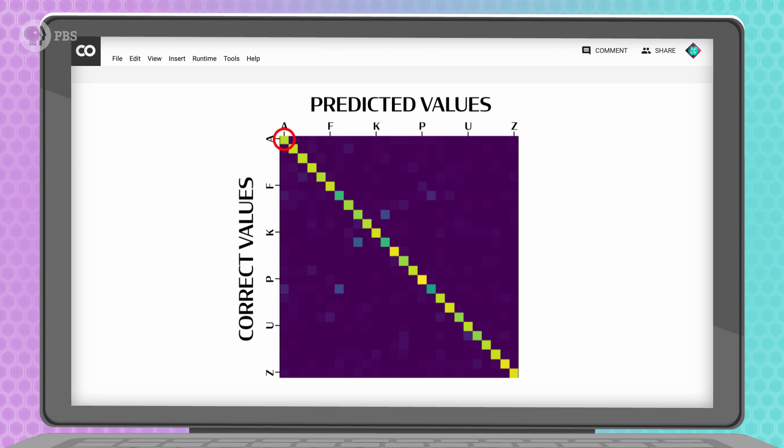So, this cell represents the number of times that our network correctly predicted that an A is an A. It's good to see a bright diagonal line, because those are all the correct values. But, other bright cells are mislabeled, so we should check if there are any patterns. For example, I and L may be easy to confuse.